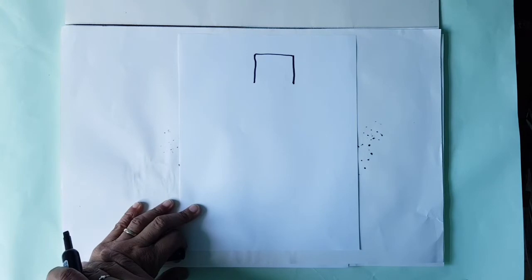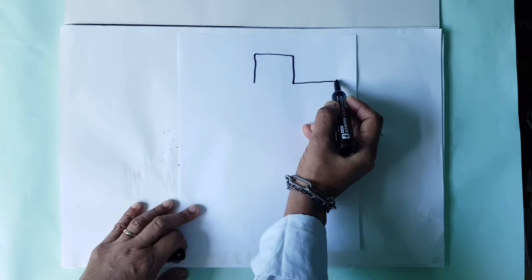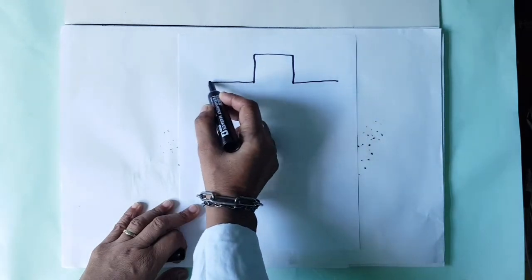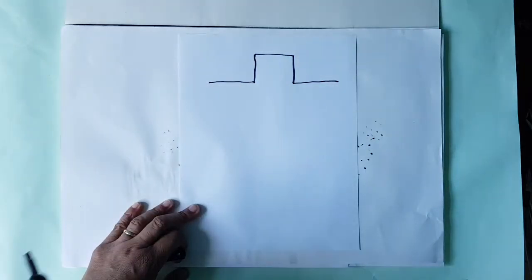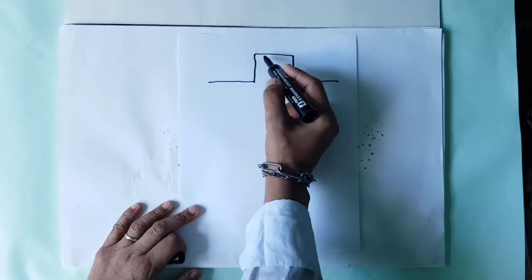So, we're going to draw the top of the cross. We're going to have it like this. Good job. And then, we're going to draw a line like this, and a line like this. But we're going to leave it open,